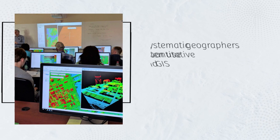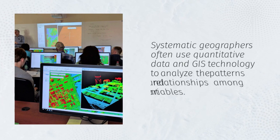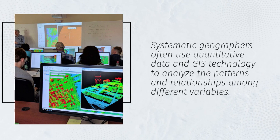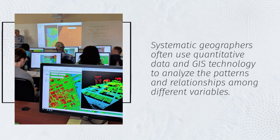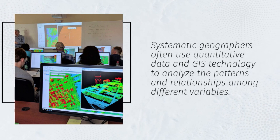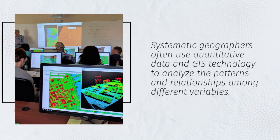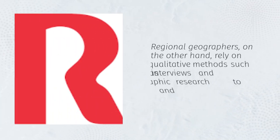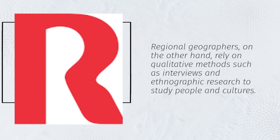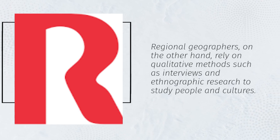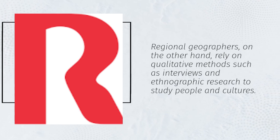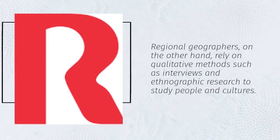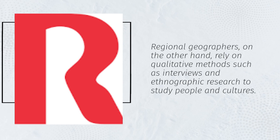Systematic geographers often use quantitative data and GIS technology to analyze the patterns and relationships among different variables. Regional geographers, on the other hand, rely on qualitative methods such as interviews and ethnographic research to study people and cultures.